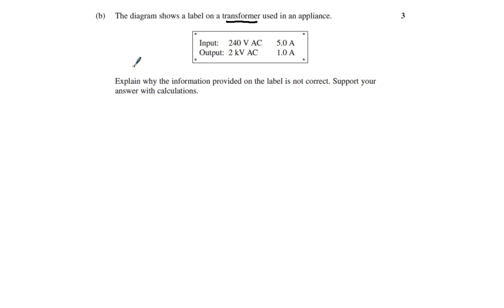For example, if voltage is stepped down, current is stepped up. Why? Because power is conserved, and ultimately energy is conserved. The question says explain why this information on this label is incorrect. Explain needs a cause and effect.